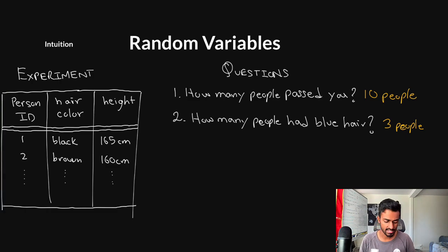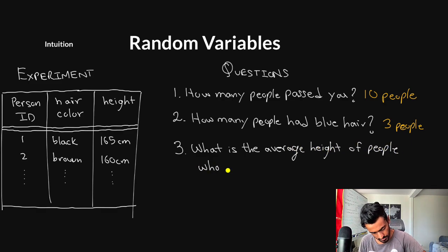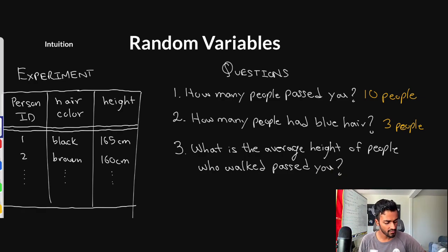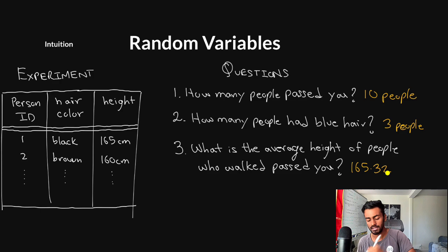And maybe a third question that we're going to ask is, we have this height column. So what is the average height of the people who walked past you? And for this case, let's say if you take the average of all of these heights, you get 165.32 centimeters. So this is really cool. We basically conducted some experiment, and we're able to ask questions about that experiment. And each of these questions have answers that are numbers. We have some measurable quantities over here. And random variables exactly allow us to do this. They help map some experiment outcomes to some measurable quantities.